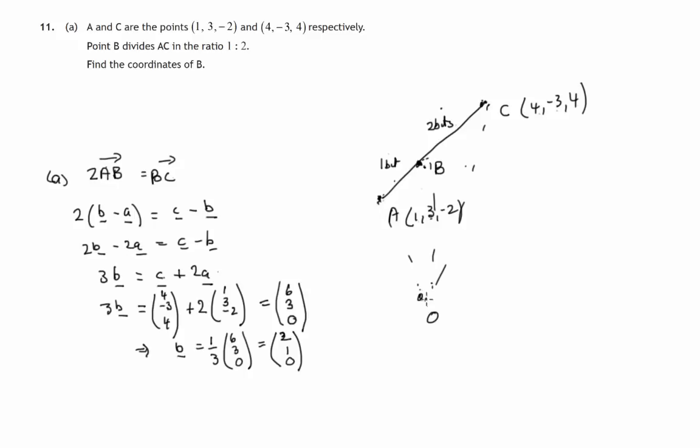So to get from the origin out to point B, we travel 2 parallel to the x, 1 parallel to the y, and we don't go up the z axis at all. So we've gone (2, 1, 0), which means we arrive at the point (2, 1, 0). So that's the coordinates of point B. B is the point (2, 1, 0).